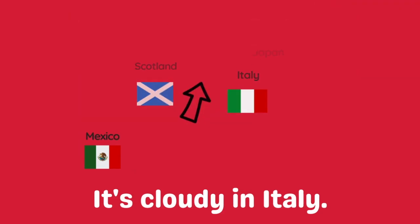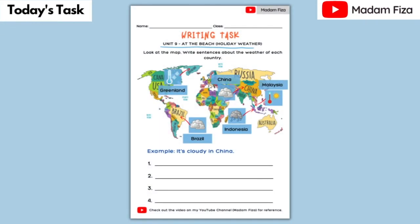Okay, this is your task for today. You need to study the map and write sentences about the weather of each country. For example, look at China. What is the weather in China? It's cloudy. So you can write: It's cloudy in China.